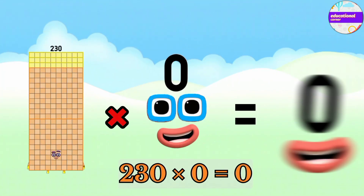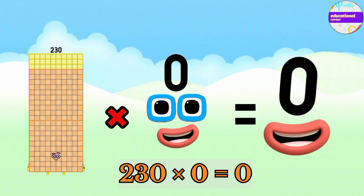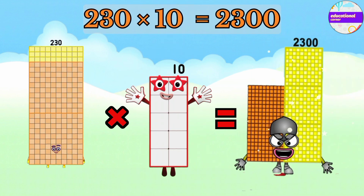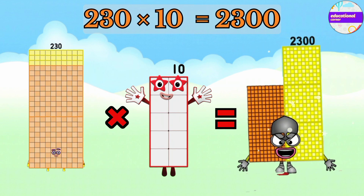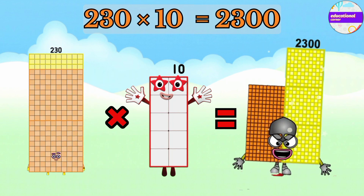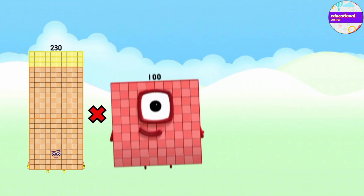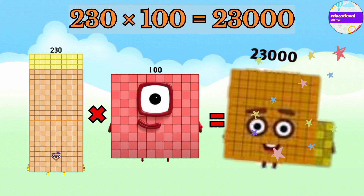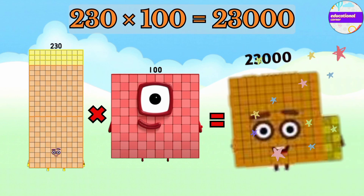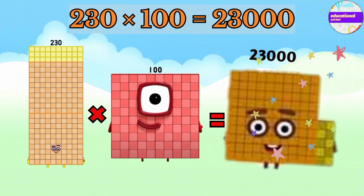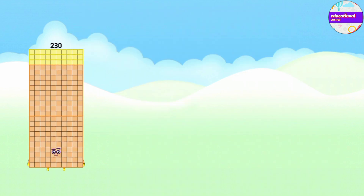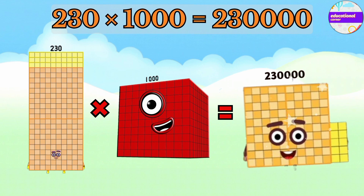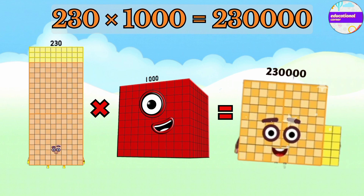230 x 0 equals 0. 230 x 10 equals 2,300. 230 x 100 equals 23,000. 230 x 1,000 equals 230,000.